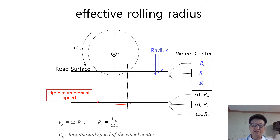In this video, I will focus on vehicle speed and inflation pressure in the case of radial tire and bias tire respectively.